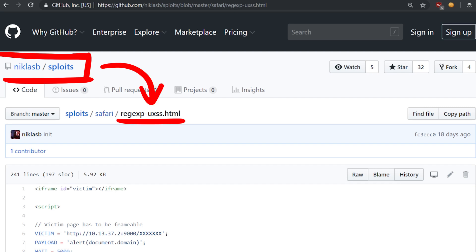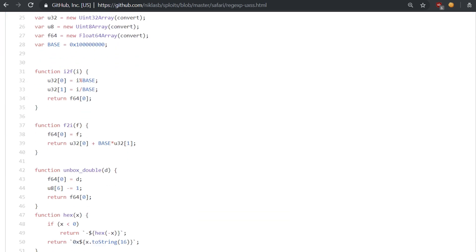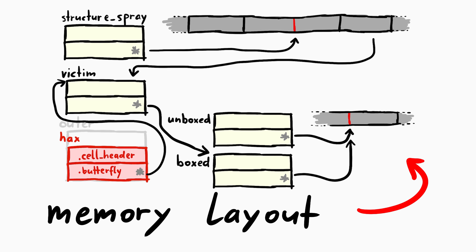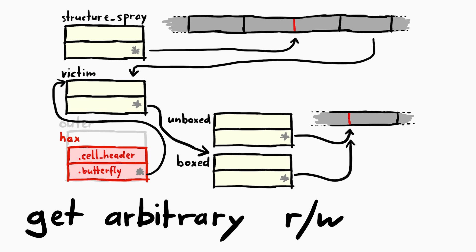Last video we followed the exploit technique Niklas used and crafted this crazy memory layout of messed up objects in memory. And now we used that to create an arbitrary memory read and write primitive.